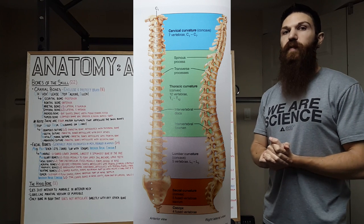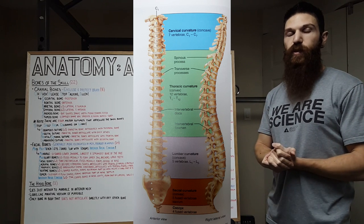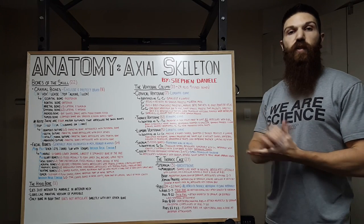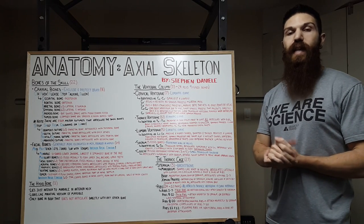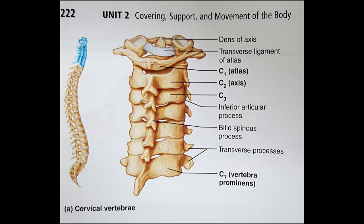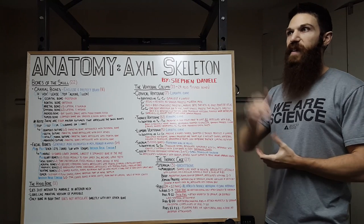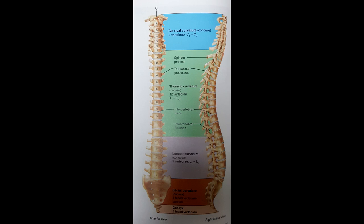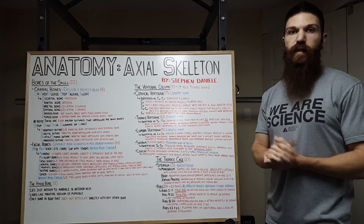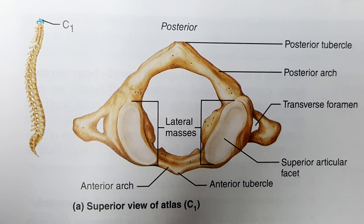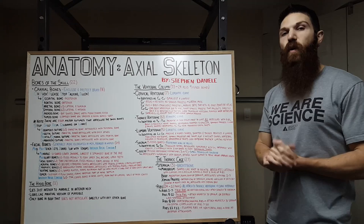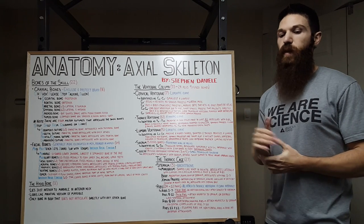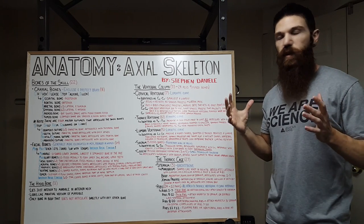Our vertebral column can further be subdivided into five separate sections. We have our cervical vertebrae — seven in total — and they form a lordotic curve. They are identified as C1 to C7, with C1 being the highest and increasing as you move inferiorly. They are the smallest and lightest of all the vertebrae. Our C1 is our atlas — it is the highest of the cervical vertebrae. It doesn't have a body and it has no spinous processes; instead, it has a lateral mass. When you're thinking of atlas, think of Greek mythology — Atlas had to carry the weight of the world on his shoulders.